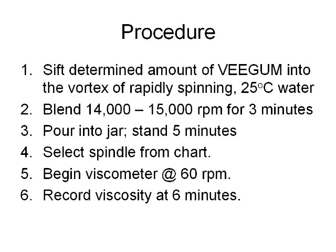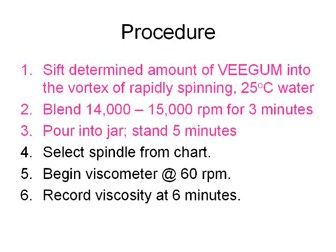Now that we have the setup completed, it is time to begin the procedure. Let's go through the normal procedure for performing a quality control test on Vigam or Vangel grades. First, sift the previously determined amount of Vigam into the vortex of rapidly spinning water. Then blend this at 14,000 to 15,000 RPM for 3 minutes. Pour the suspension into a jar and allow it to stand for 5 minutes. Select the appropriate spindle from the chart. Begin the viscometer at 60 RPM. And lastly, record viscosity at 6 minutes.